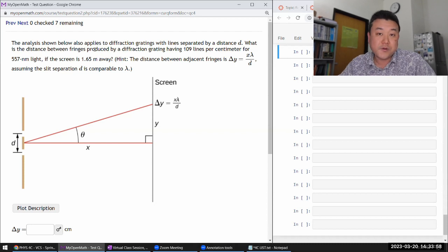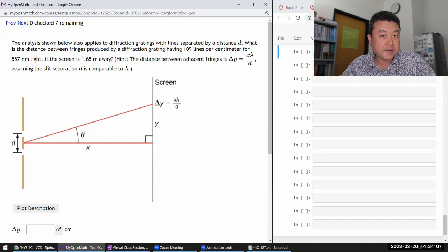What is the distance between fringes produced by a diffraction grating having 109 lines per centimeter for this wavelength light if the screen is this distance away? They already derived all the expressions for you: delta y is x lambda over d. The only thing we are missing is we're not given d directly.